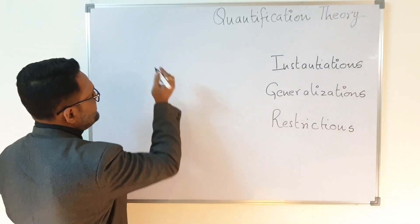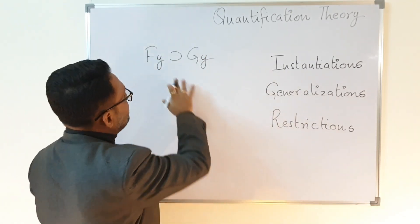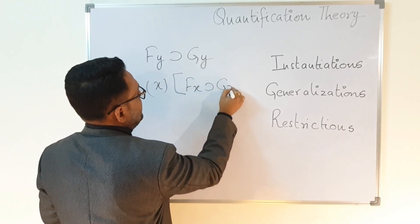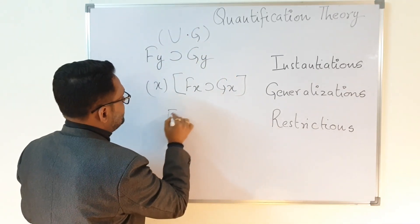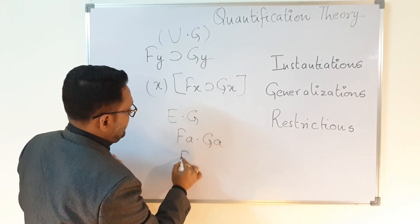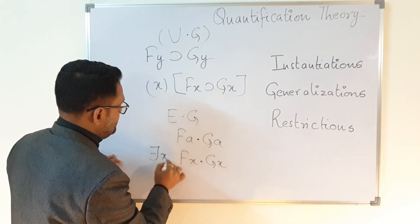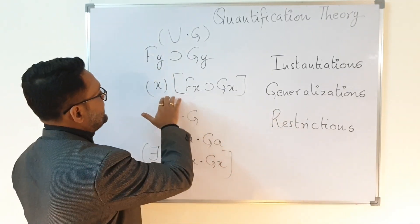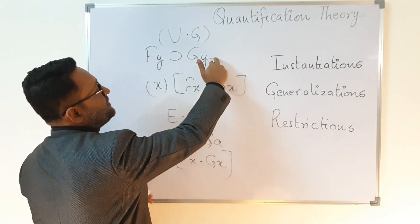Now let us understand generalizations. Suppose while solving a question we arrive at 'fy implies gy'. We can put a generalization to get 'for all x, fx implies gx'. This is universal generalization, or UG. Similarly, if we have 'fa dot ga', we can generalize to get 'there exists x, fx dot gx'. This is existential generalization, or EG. So going from quantified to instantiated form is instantiation, and going back is generalization.